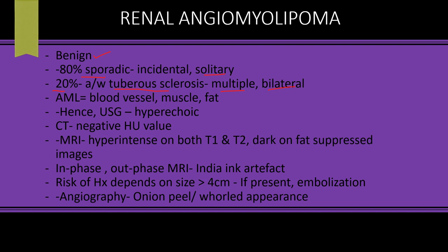An incidental finding of bilateral multiple renal angiomyolipomas may be the only sign of tuberous sclerosis in some patients. Because it contains blood vessels, muscle, and fat, the fat content makes it hyperechoic on ultrasound, and on CT scan it will have a negative HU value of approximately minus one hundred.